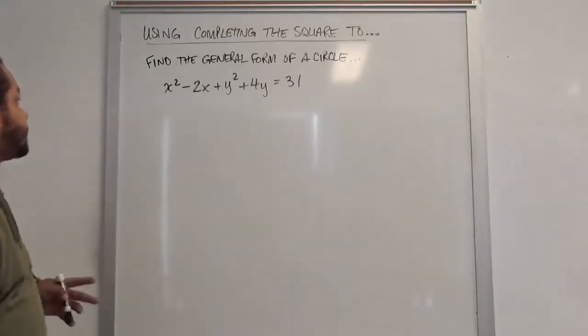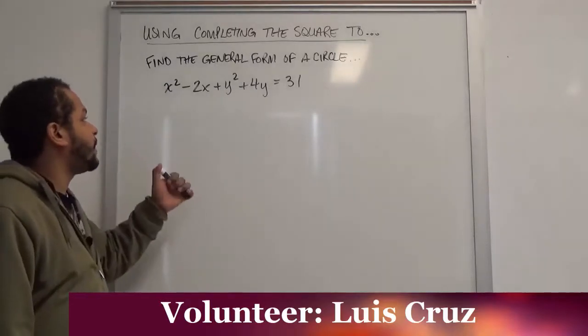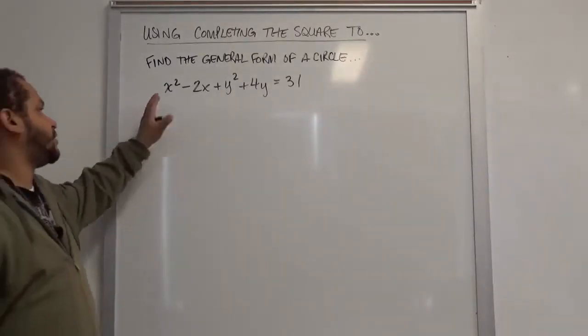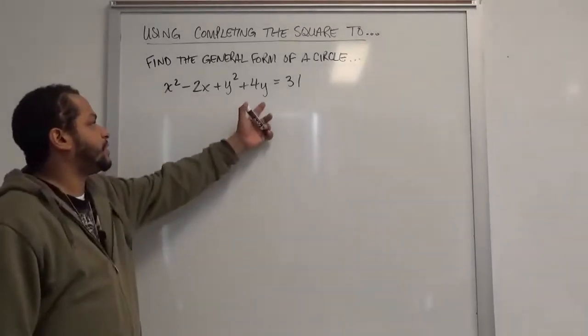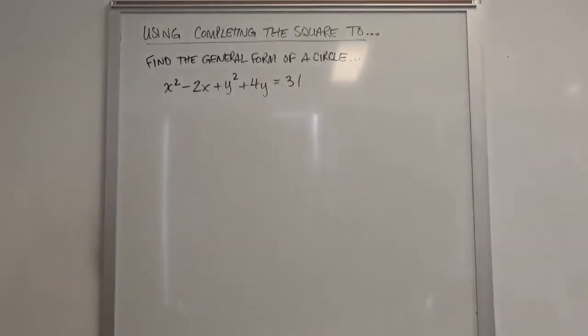In this component of the video, we're going to be using completing the square to find the general form of a circle. Here we see the beginnings of the circle equation where we have x squared and y squared. We have our x component and y component, and the constant at the far side of the problem.